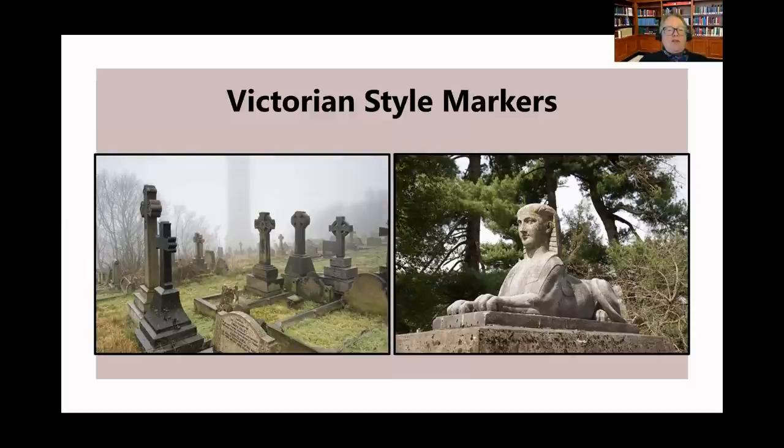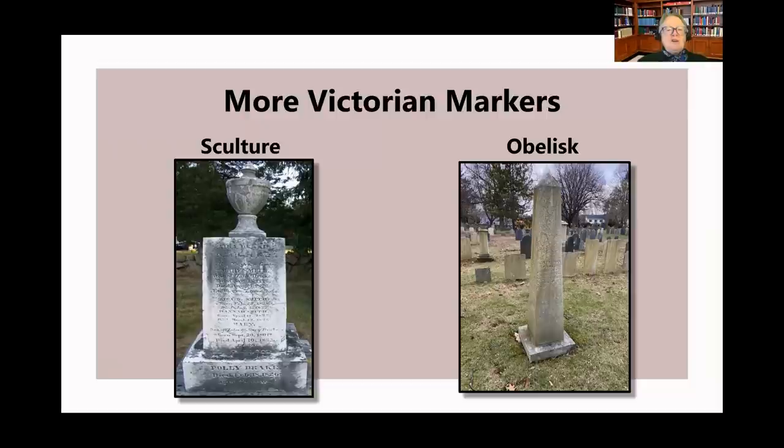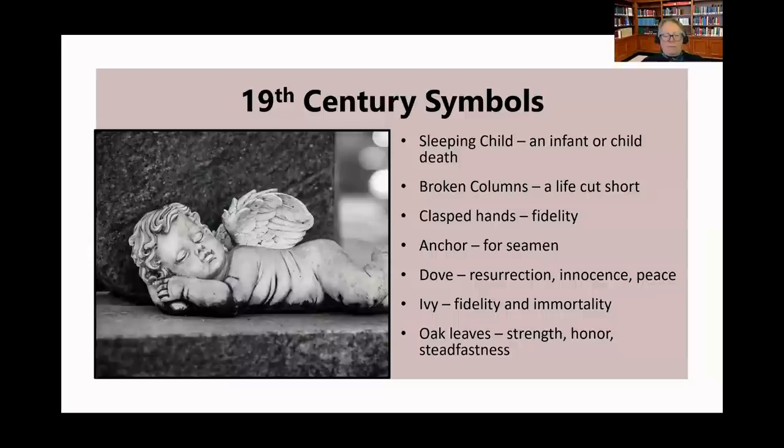Here are some examples of Victorian style markers. On the left we have massive monuments where stone blocks have been layered and topped by a cross. On the right we see an Egyptian-influenced sphinx sitting atop a grave. Here are more Victorian markers — on the left a layered monument topped by a richly carved urn, and on the right an obelisk, again an Egyptian-influenced symbol with writing on all four of its sides.